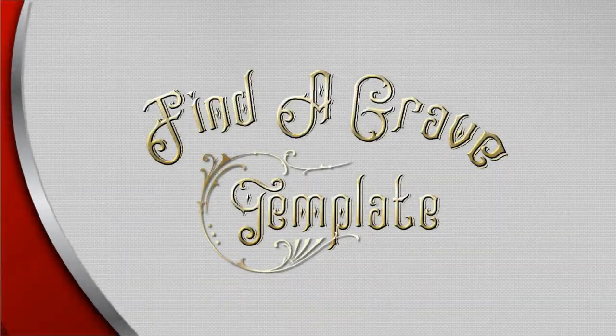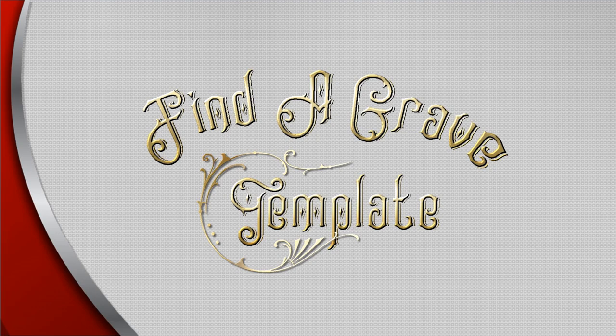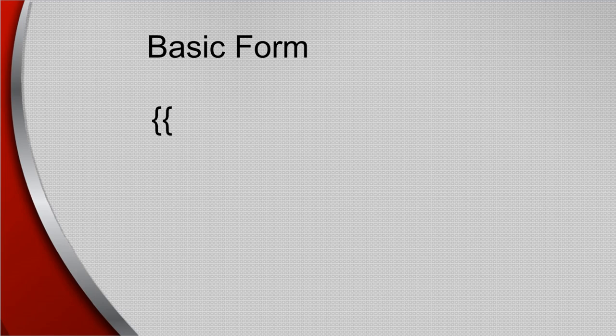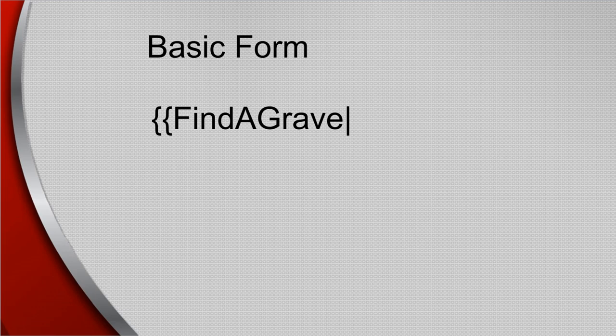First, a word about the WikiTree Find a Grave template. In its basic form it is a pair of curly brackets, the Find a Grave text, a vertical bar, the memorial number, and a closed pair of curly brackets. That means the memorial belongs to the WikiTree profile.